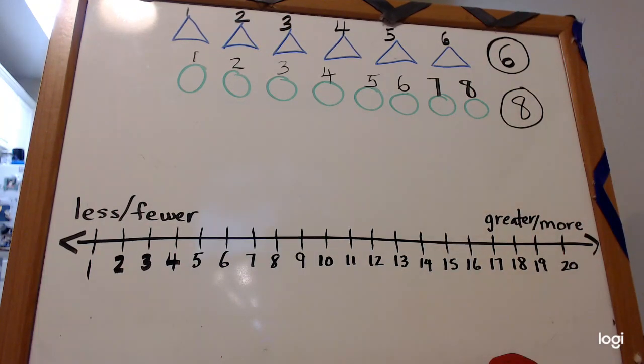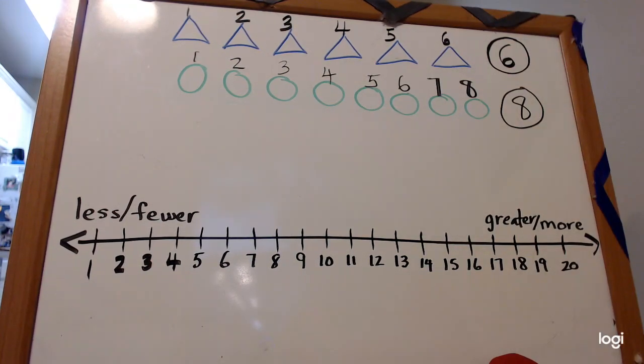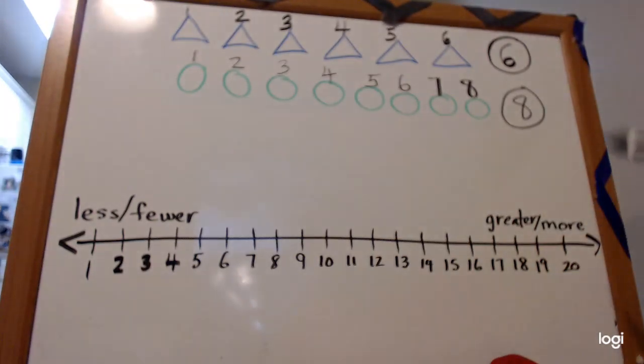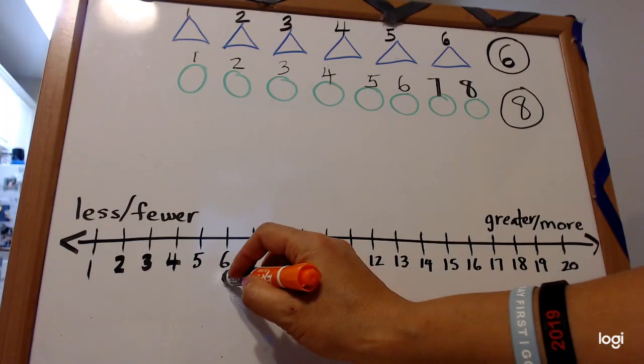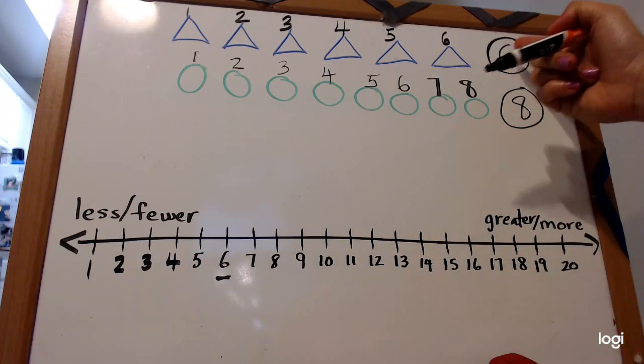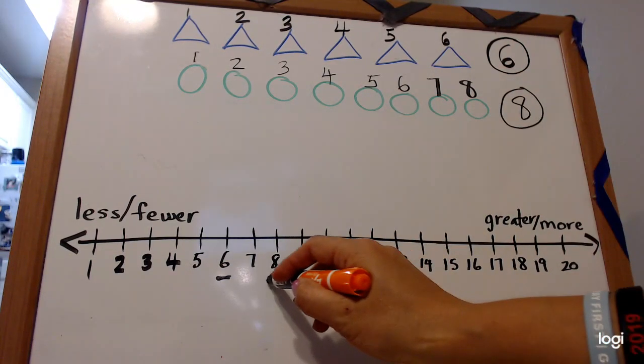And then do you remember what to do after we have counted the first and the second set? And you notice I have the number line written right here for you. So now we use the number line and we go down and we find six and we find the number eight on the number line.